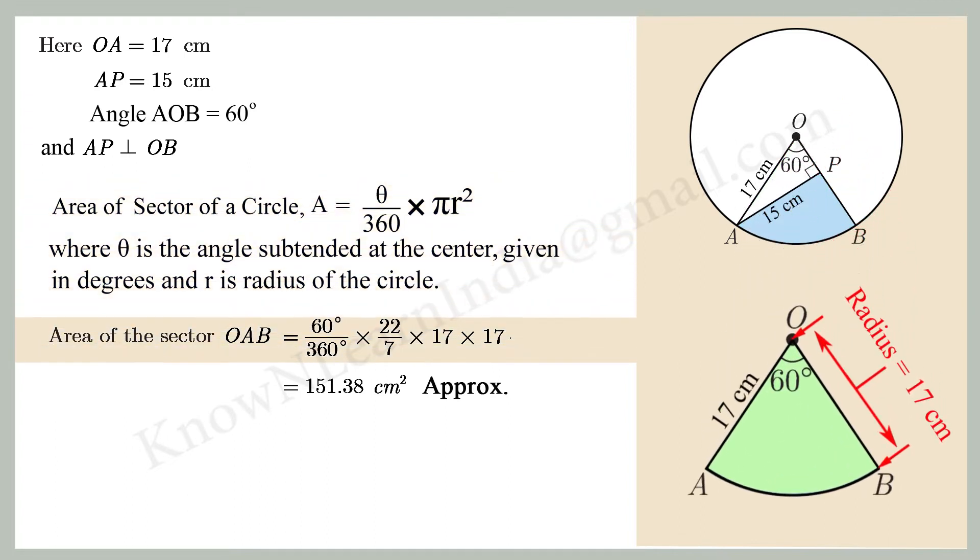Substituting the values of theta which is 60 degree and R equal to 17 cm in the formula, we get area of the sector OAB equal to 60 by 360 into 22 by 7 into 17 into 17 equal to 151.38 cm square approximately.